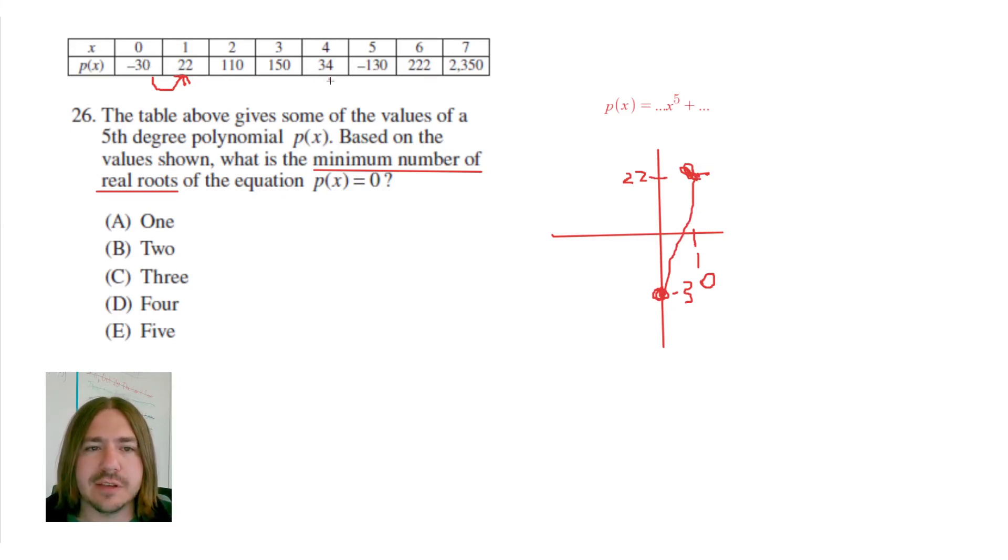There has to be a zero from 34 to negative 130. There has to be a zero from negative 130 to 222. And that's it as far as the minimum number of zeros here.